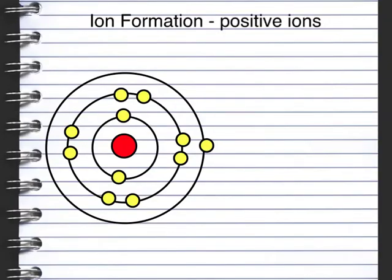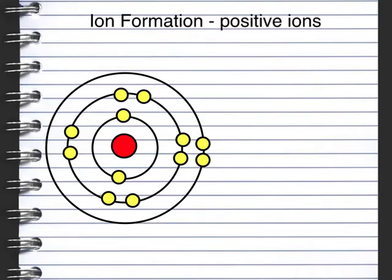We'll start by looking at ion formation. Here we have an element in group 1 - we can tell this because we've got one electron in its outer shell. This one electron will leave, meaning we now have more positive charge in the nucleus and less negative charges around the outside. This will form a plus 1 ion. If we were to have two electrons in the outer shell we'd be in group 2, and we can lose both these electrons to form a plus 2 ion.